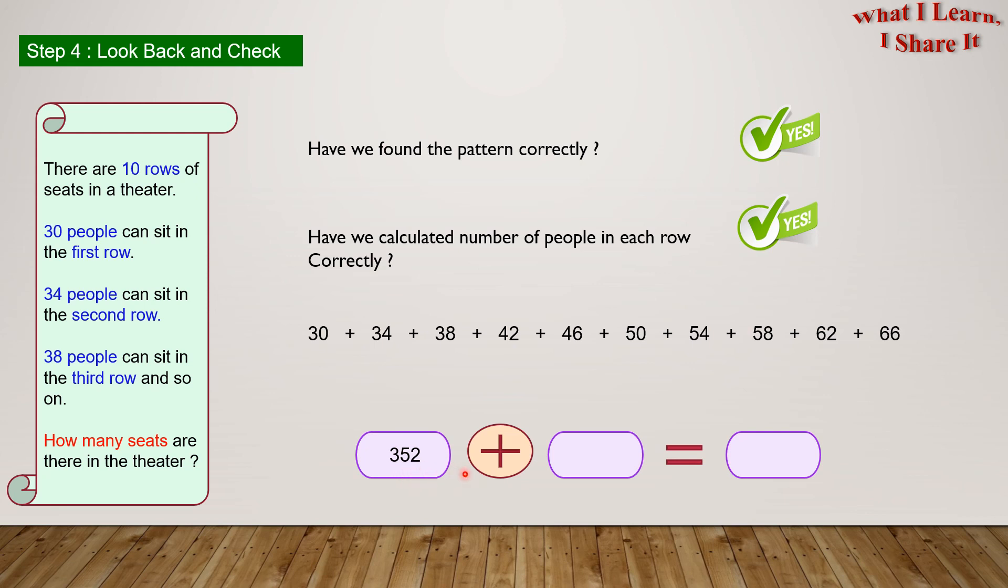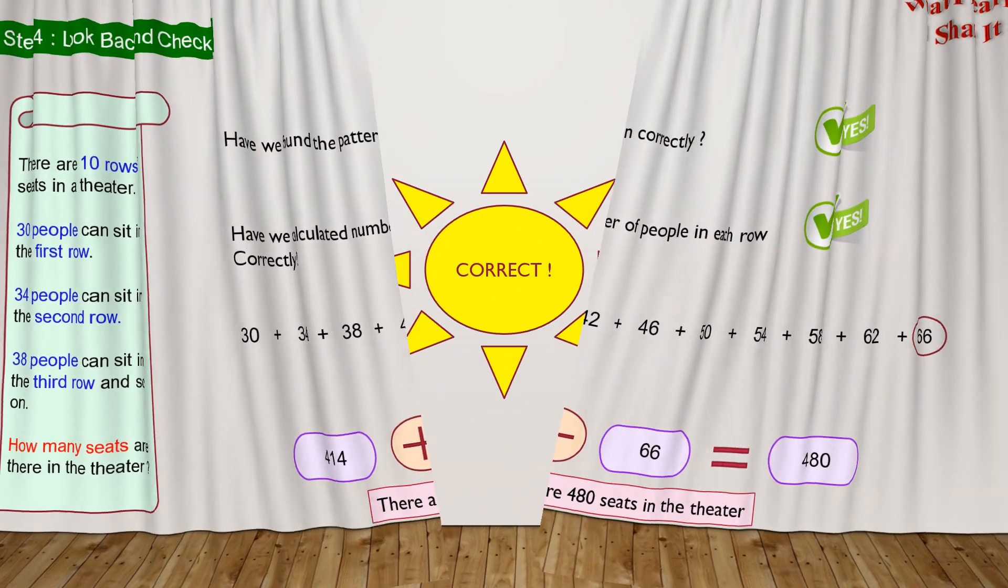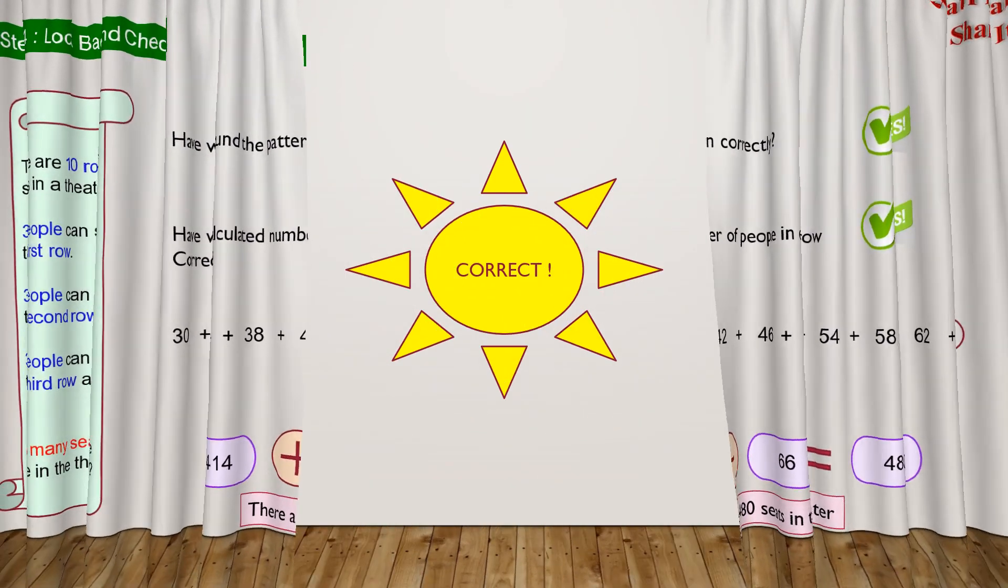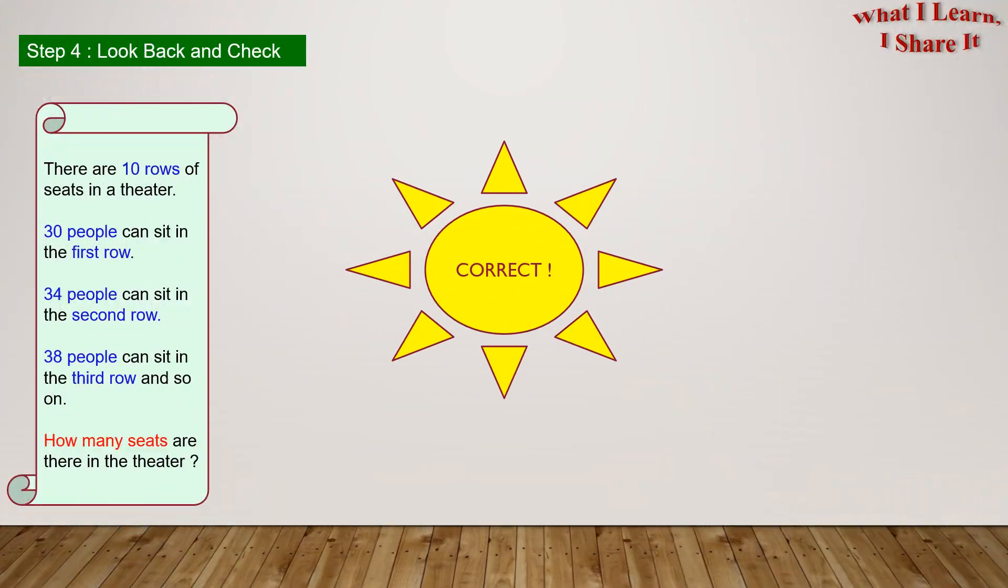240 plus 54 equals 294. 294 plus 58 equals 352. 352 plus 62 equals 414. 414 plus 66 equals 480. So this means our answer is correct! Yay! We solved the problem!